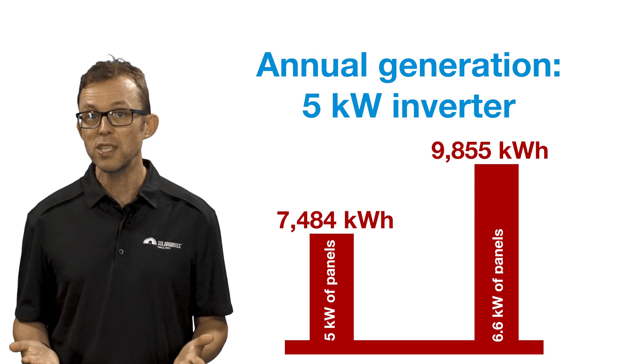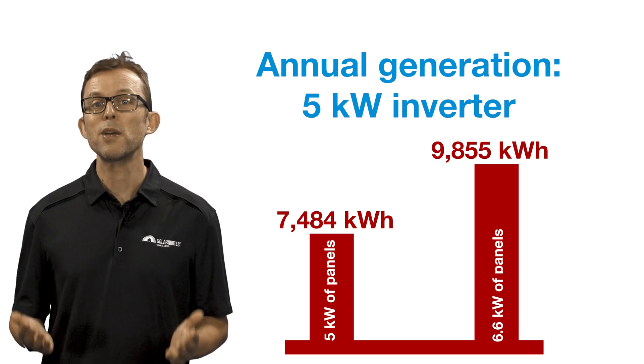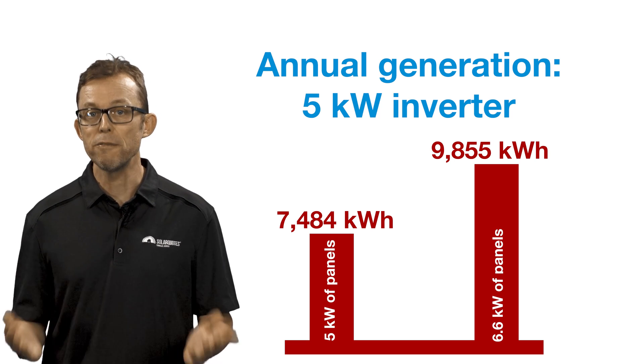Firstly, the solar rebate is based on panel capacity, not inverter capacity. And you can have 33% more panels than an inverter is rated for and still claim the rebate. And since there's little extra installation cost in adding 33% more panels when the installers are already on your roof, oversizing often delivers bang for buck. Secondly, you'll squeeze way more power annually out of an oversized 6.6 kilowatt system with a five kilowatt inverter compared to five kilowatts of panels with a five kilowatt inverter.